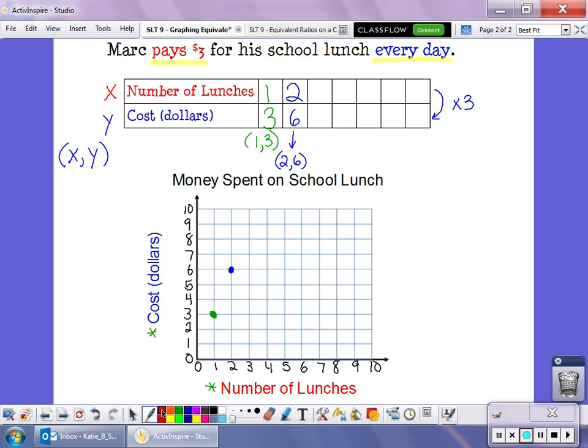So two lunches are six dollars. Now let's fill in the rest of our table. For example, if we bought three lunches, three times three is nine. That's an ordered pair of three comma nine. If he bought four lunches, four times three gives me twelve. That's an ordered pair of four, twelve. If he bought five school lunches, five times three is fifteen.